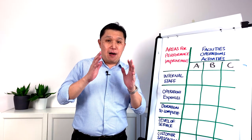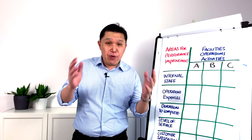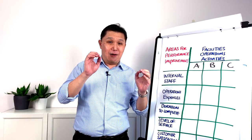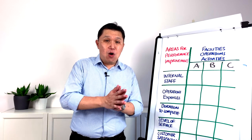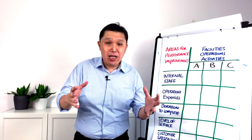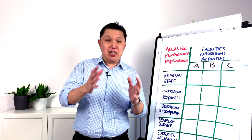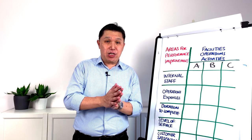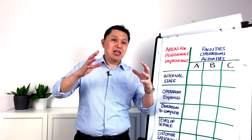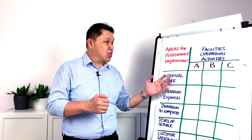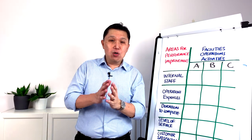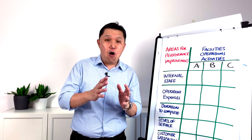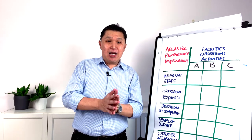I'd like you to start off by reviewing your FM activities. Take notes of which activities are important in supporting the core business function of your organization, and which activities will facilitate achievement of the strategic plan objectives.